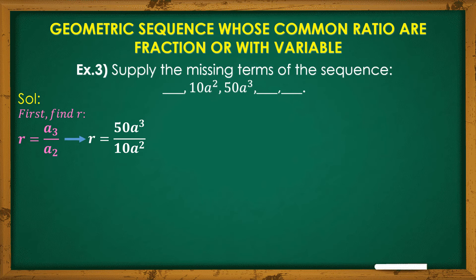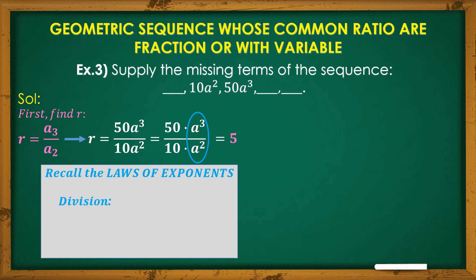Now, 50 a raised to 3 is our a sub 3 and 10 a squared is our second term. By division, ito yung magiging solution natin. Madaling isolve yung 50 divided by 10. It's 5. But how about this variable with exponents? Let's recall the laws of exponents. Since this is division, paano nga ulit magdivide ng mga variables with exponents? Let's recall this formula. Dividing same base, the exponent will be subtracted. So, x raised to m over x raised to n, we will get x raised to m minus n. So, kung babalikan natin ng a raised to 3 divided by a raised to 2, ang mangyayari ay a raised to 3 minus 2, which is 1. So, ang mga kasama ni 5 ay a. Again, we recalled the laws of exponents with division.